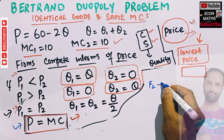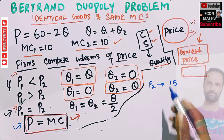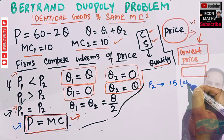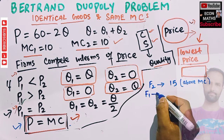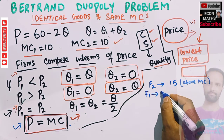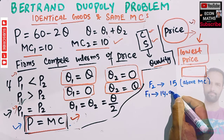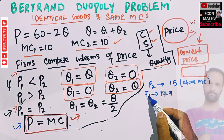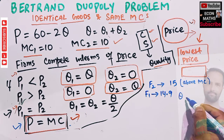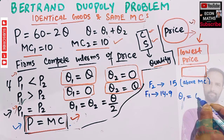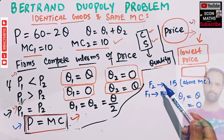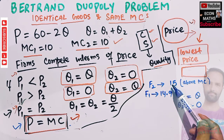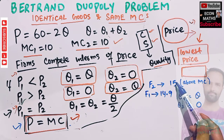Suppose firm two sets a price of $15, which is above the marginal cost of $10. Firm one can set a price slightly below $15, say $14.90. Since firm one's price is less than firm two's price, firm one will capture all the market and firm two will get zero market share, because the firm which sets the lowest price captures all the market.